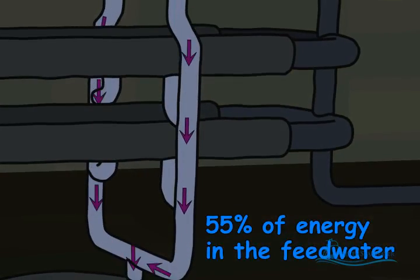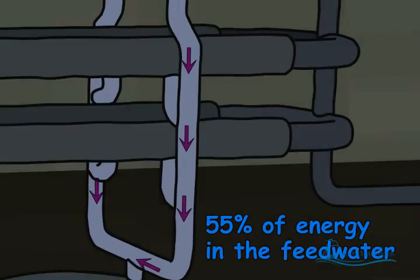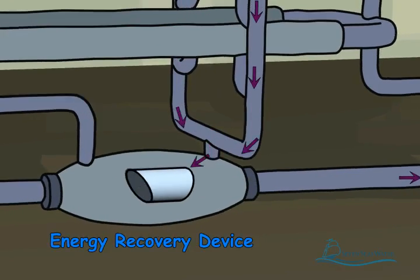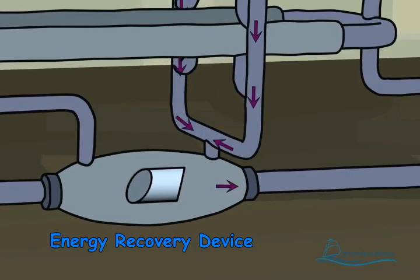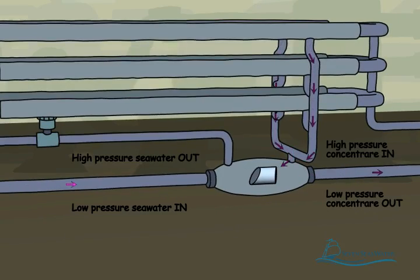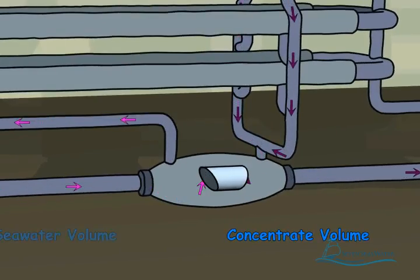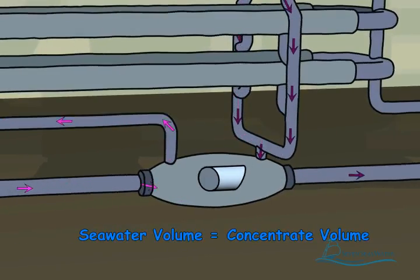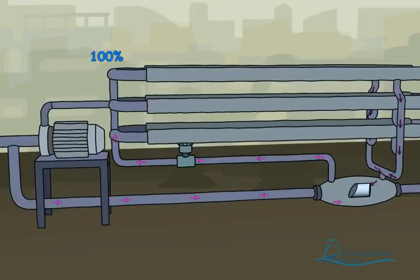The concentrated salt stream retains about 55% of the total energy of the seawater stream that was originally fed to the membranes. To reduce the energy that is required to operate the reverse osmosis plant, the pressurized concentrated stream is piped into an energy recovery device. Here, up to 98% of the energy of the concentrated salt stream is transferred to an equal volume of the incoming seawater in an isobaric energy recovery device. The energy recovery device significantly reduces the plant's operating costs by recovering the concentrated salt stream energy and using it to pressurize 60% of the seawater that is fed to the membranes.